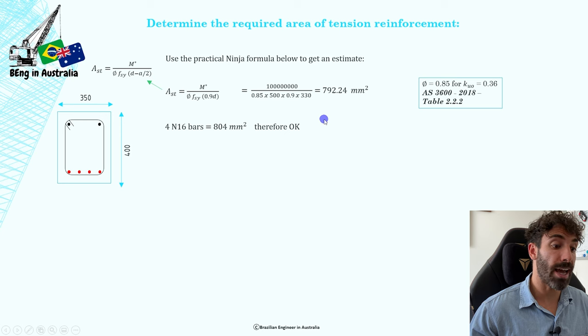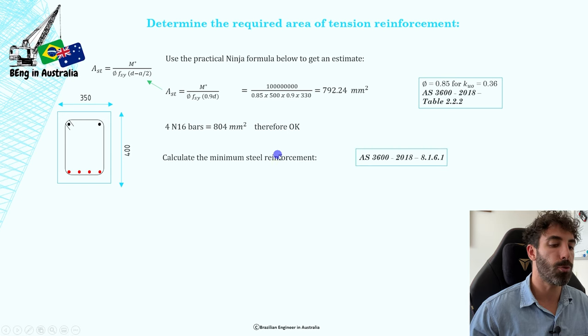That was pretty much a less than a minute calculation, and it is quite accurate, so you don't dare to say my video is clickbait. That was less than a minute. You just needed to apply this formula. It's simple, very simple. Before we proceed, we're going to calculate the minimum steel reinforcement for this beam so that we make sure that the minimum is less than 804.